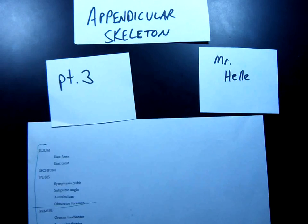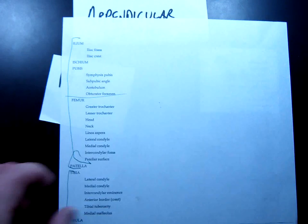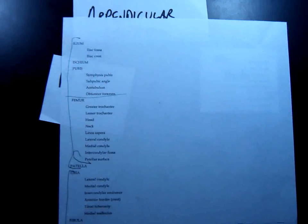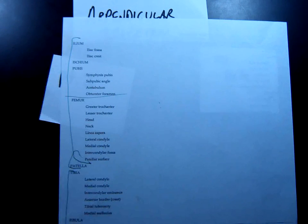All right, so this is appendicular skeleton part three, and we're going to start here at the top of this sheet with this bone called the ilium. Now, these three bones here, the ilium, the ischium, and the pubis, are three pairs of bones that form the pelvis.